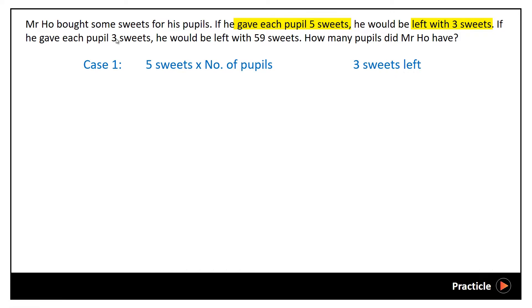If he gave each pupil 3 sweets, he would be left with 59 sweets now.